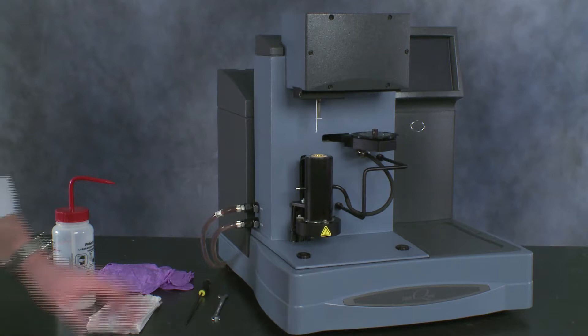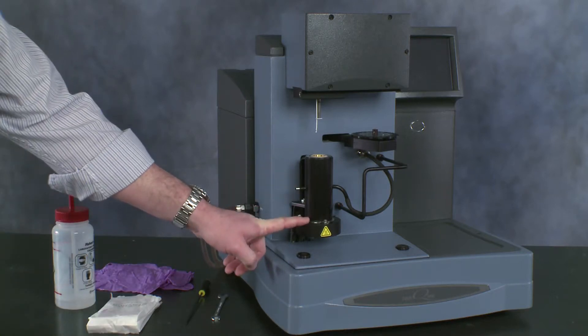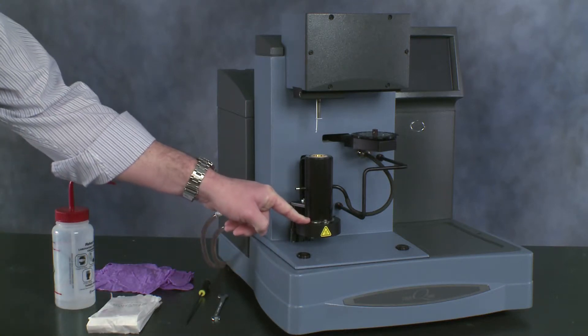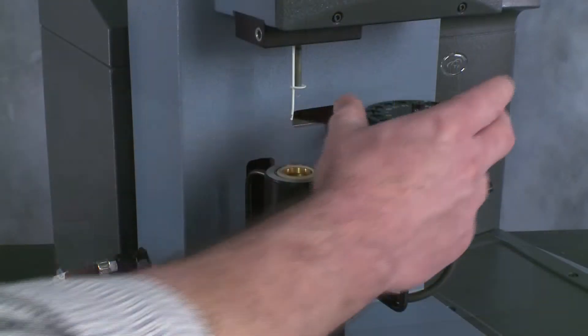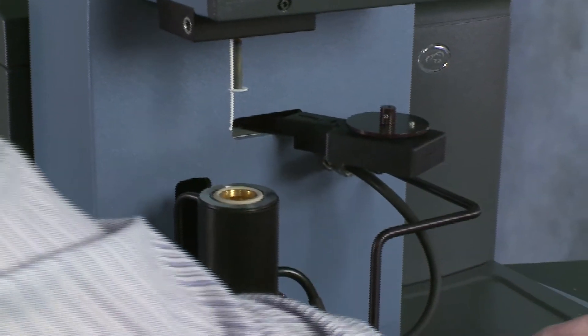When we're cleaning the furnace, the first thing we want to do is lower the furnace to its lowest position and turn the power off to the TGA. We may also want to remove the auto-sampler tray to help with access.